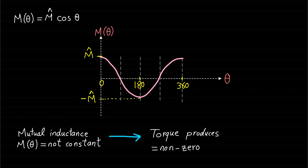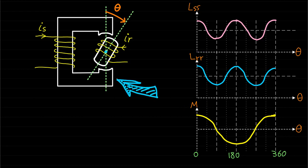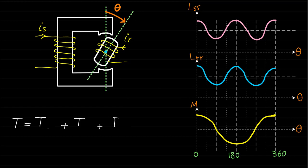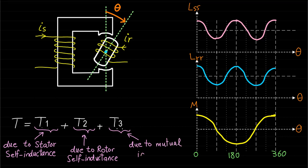From all of the above, we can conclude that the stator self-inductance, rotor self-inductance, and the mutual inductance are all changing with rotor position for this rotating system as shown. Therefore, the torque expression of this double-excited system will have three terms. The first term T1 is related to the change of stator self-inductance. The second term T2 is related to the change of rotor self-inductance. And the third term T3 is related to the change of mutual inductance.